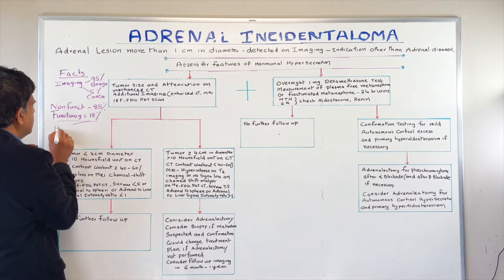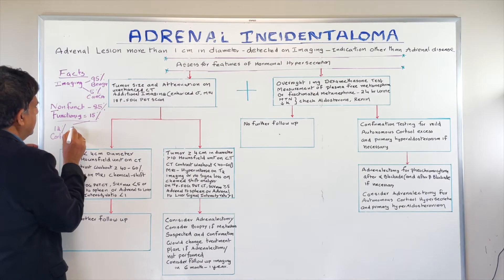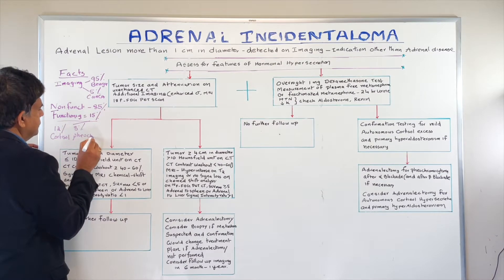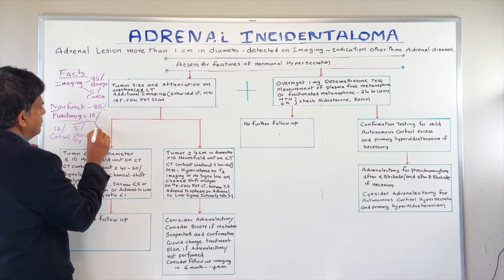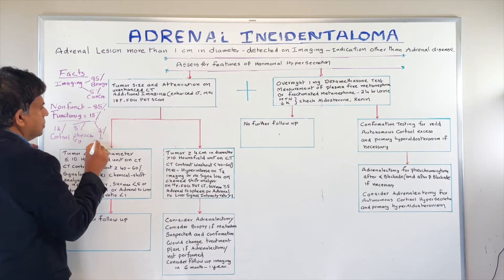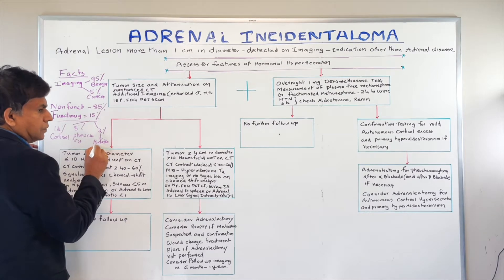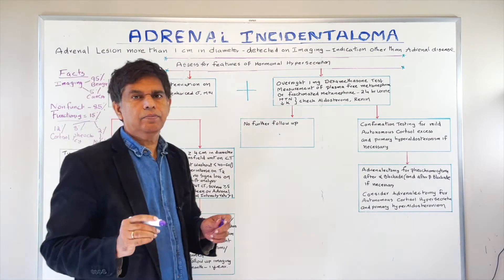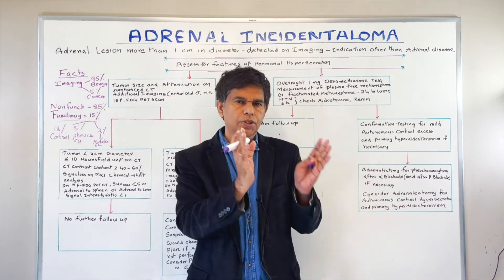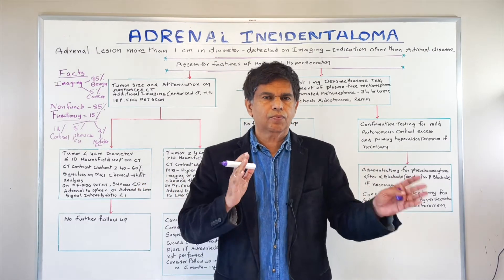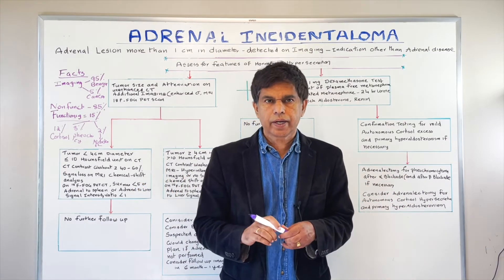When you look at the functioning tumors, around 12% are cortisol-producing, around 8% are pheochromocytoma, and around 2% will be aldosterone-producing. These numbers are very important to know before we go any further — expressing numbers tells you how large the situation is and why you need to act on it.